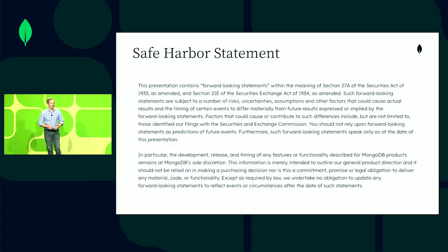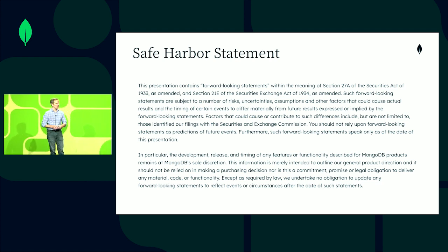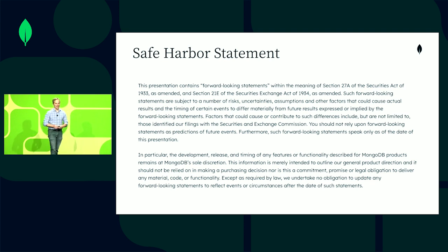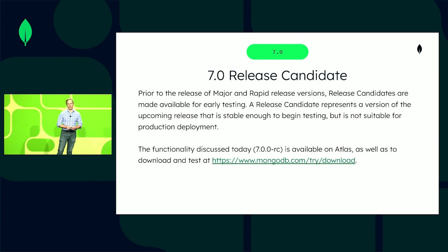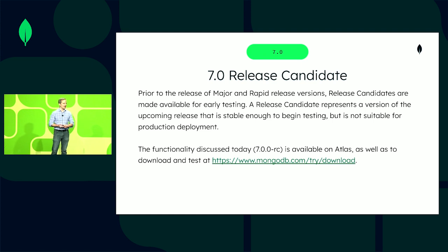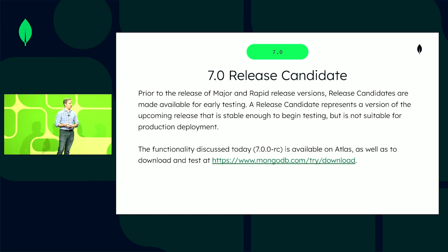Before we jump into the specifics, in addition to all the features and functionality we're going to be talking about, we're also going to be talking about some future-looking statements, whether it's new functionality or timing. Just understand that, as in all cases, that's always subject to change. I'm also excited to announce that here at Local, you'll have the ability to access the 7.0 Release Candidate. You can download and experience nearly everything I'm going to present today — check it out on Atlas, or download it and test it on your own workstation. Because it's a Release Candidate, you can use it for testing and evaluation, but it's not quite ready for production. We'll be announcing it for production later this summer.